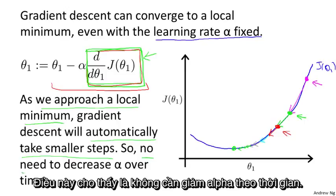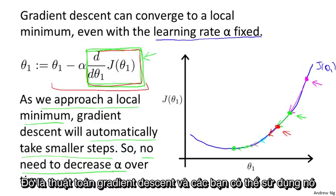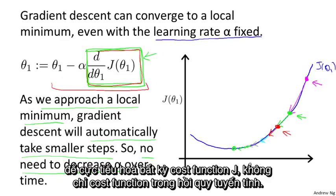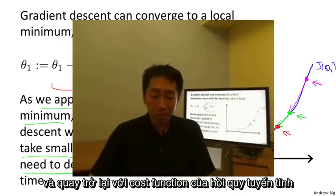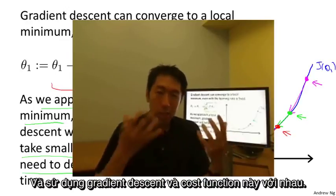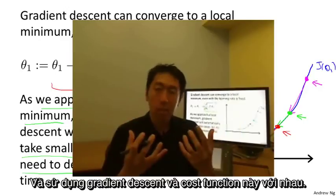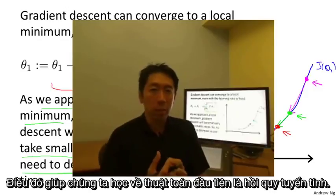So that's the gradient descent algorithm — you can use it to minimize any cost function J. In the next video, we're going to take gradient descent and set J to be exactly linear regression's squared cost function. Putting gradient descent and the squared cost function together will give us our first learning algorithm: the linear regression algorithm.